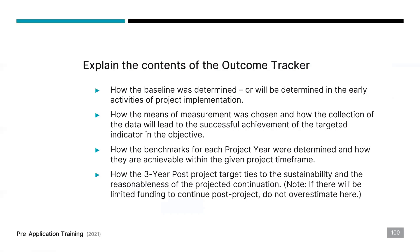All of this will be described narratively. You're going to explain the contents of the Outcome Tracker, describe how the baseline was determined or will be determined. Describe how the means of measurement was chosen and how the collection of data will lead to successful achievement of the targeted indicator and the objective. Describe the benchmarks for each year — for instance, whether your numbers are cumulative or represent new people each year. It's very important that you narratively describe that clearly.